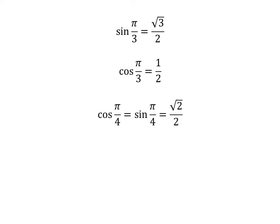As we know, sine of pi upon 3 is equal to square root of 3 upon 2, cosine of pi upon 3 is equal to one half, and cosine of pi upon 4 is equal to sine of pi upon 4 is equal to square root of 2 upon 2.